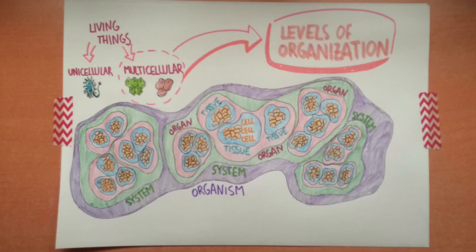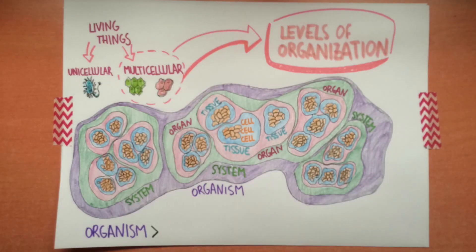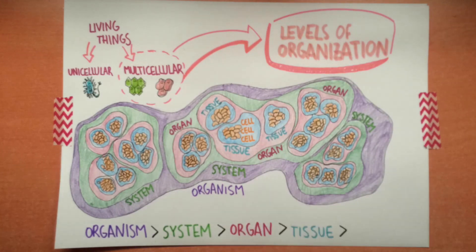So an organism is made up of systems, a system is made up of organs, an organ is made up of tissues, and a tissue is made up of cells.